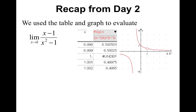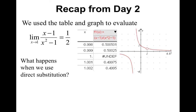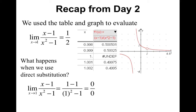So from day two, when we were doing graphs and tables, we used a table and a graph and looked from the left and the right to see what value the limit approached. We did find that it was one half. Now, if we use direct substitution, we are going to go ahead and plug in one where x is. When that happens, you will see that we're going to get zero over zero.